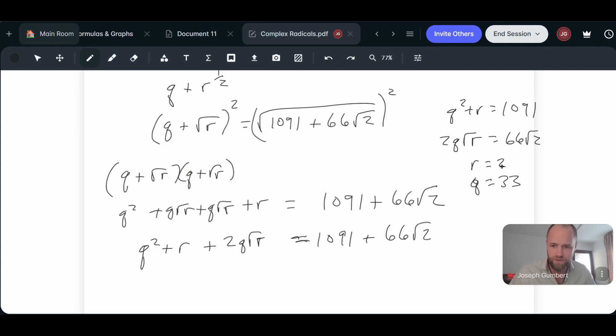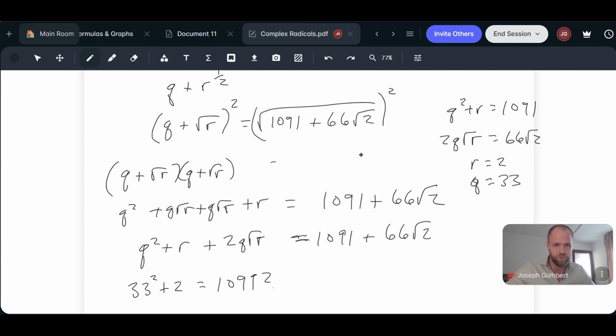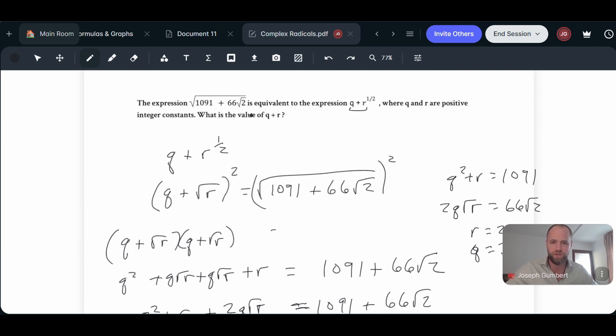So I just want to go ahead and test out to see if that would actually work. So if I had 33 squared plus 2, would that equal 1091? Let's go ahead and take a look at that on Desmos. So let's see, 33 squared plus 2 is 1091. So that checks out. And so then we already know that the 2q root r equals 66 root 2. We already know then that that's going to work, that q is equal to 33 and that r is equal to 2. And so what is the value of q plus r? That is going to be 35 as the correct answer.